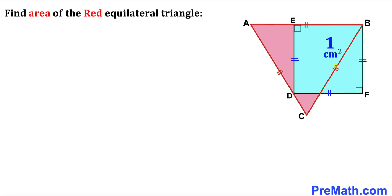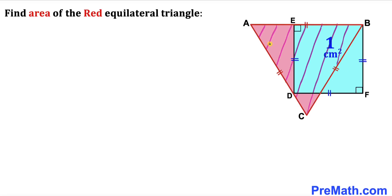Welcome to pre-math. In this video we have a blue square and a red equilateral triangle ABC put together, as seen in this diagram, such that the area of blue square EBFD is 1 cm². We are going to calculate the area of red equilateral triangle ABC.